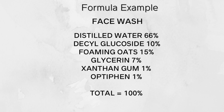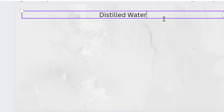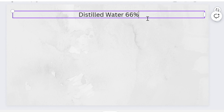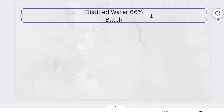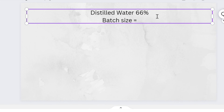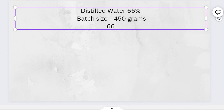In my formula example I have a face wash formula that adds up to 100%. This is just a general example. I'm going to show you how to convert this to the unit of measurement — in this case, grams. I'm going to start by converting distilled water, which is at 66%, and my batch size is 450 grams.